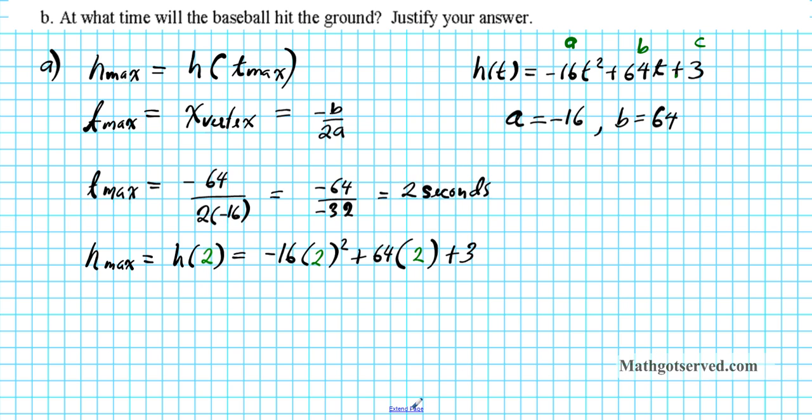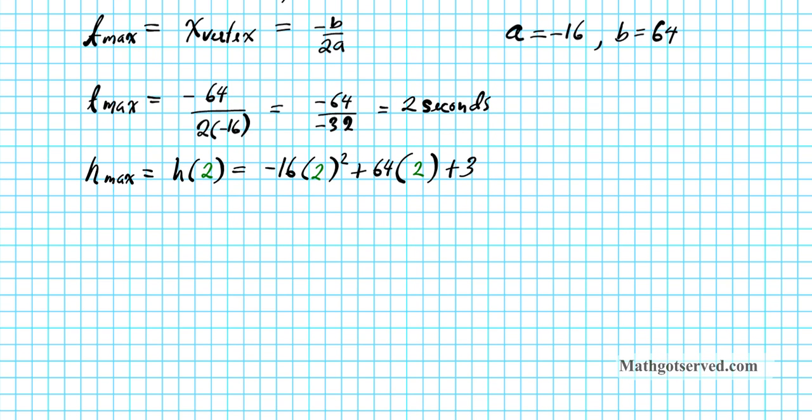Now we're going to use order of operations to evaluate this expression. So we're going to do exponents first. Negative 16, 2 squared is 4, that's 4, plus 64 times 2 is 128 plus 3. And that is equal to negative 64 plus 131. And when you combine these two you end up with 67 feet. So this is the time when you achieve the maximum height and this is the maximum height.